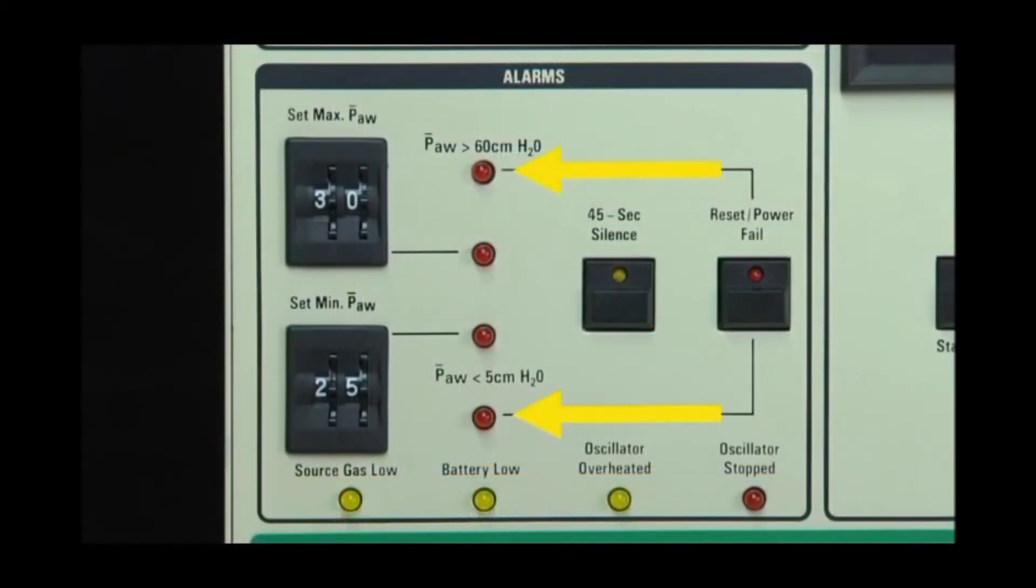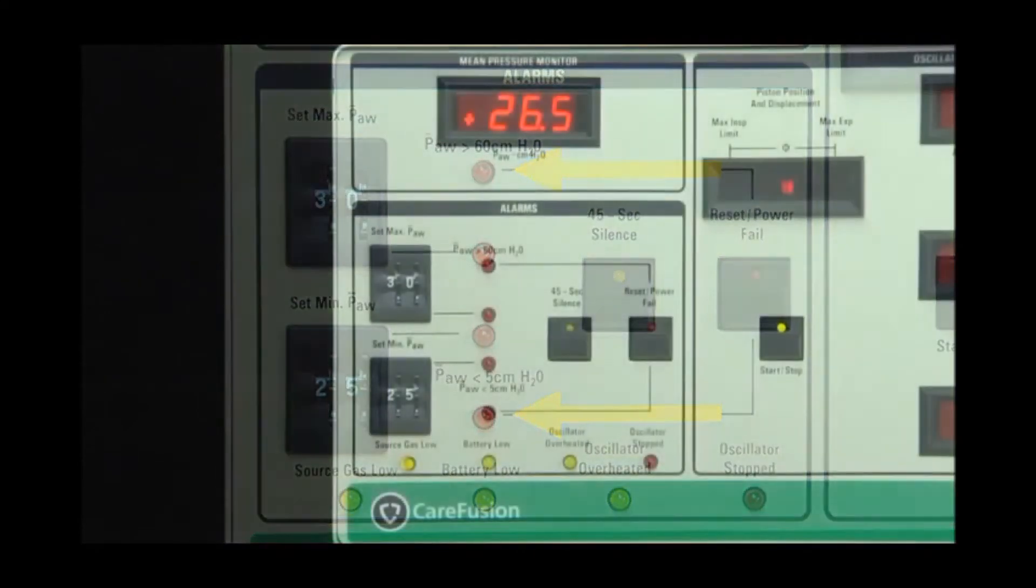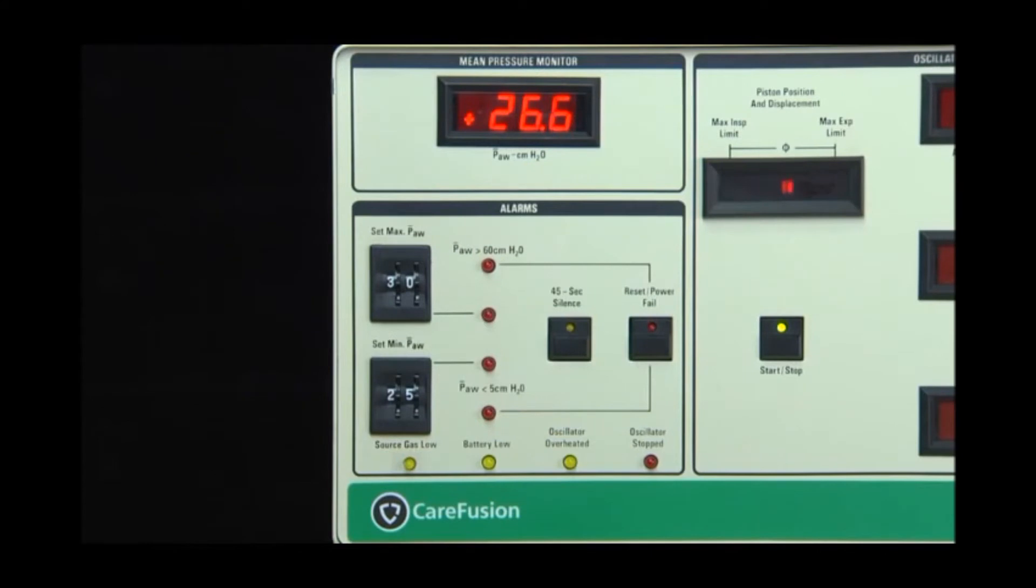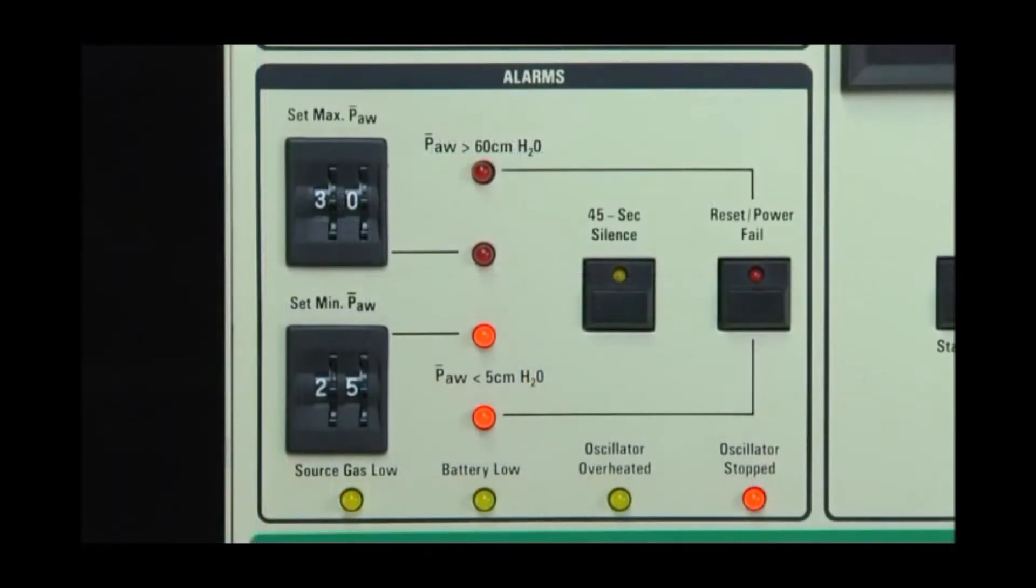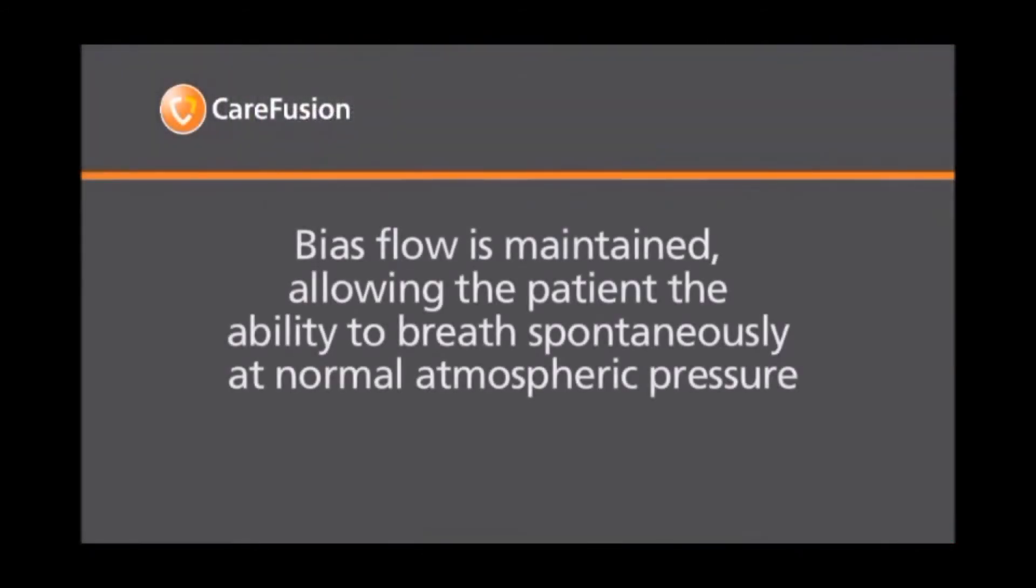Activation of the backup mean airway pressure alarms will also trigger audible and visual alarms. These backup alarms are factory preset for greater than 60 centimeters of water pressure for the high alarm and less than 5 centimeters of water pressure for the low alarm. When these alarms are triggered, the oscillator will stop and the circuit pressures will be vented to ambient pressure. Bias flow will continue. Bias flow is maintained allowing the patient the ability to breathe spontaneously at normal atmospheric pressure.